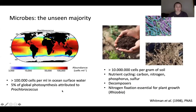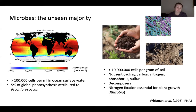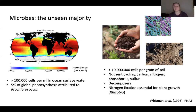Just because we can't see the microbes doesn't mean that they are not abundant or important. Take the ocean for example — in just one milliliter of seawater you are likely to find more than 100,000 microbial cells. One of the bacteria you are likely to find in such a sample is Prochlorococcus. This bacterium is incredibly abundant and does photosynthesis. In fact, it's been estimated that Prochlorococcus is responsible for 5% of the global photosynthesis.